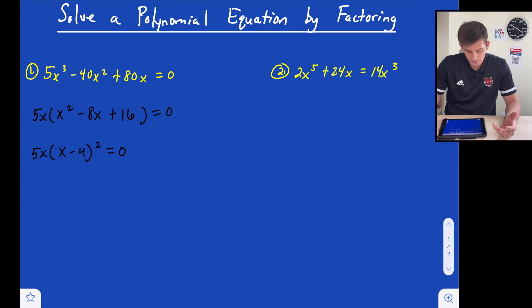So x minus 4 quantity squared because if I look at my b term which is negative 8 and I divide that by 2, so negative 4 and I square it, I get 16 which is my value I have for c.